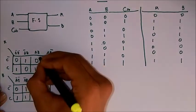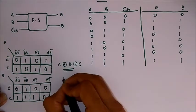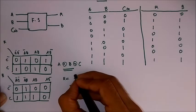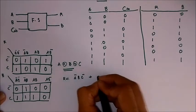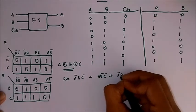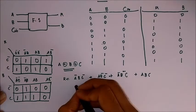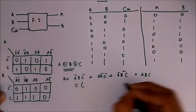That is, result is equal to A bar B C bar plus A B bar C bar plus A bar B bar C plus A B C. And on taking C and C bar common, we get A bar B bar plus A B and C bar when taken common, A bar B plus A B bar.